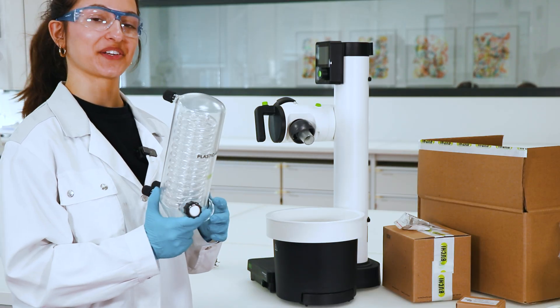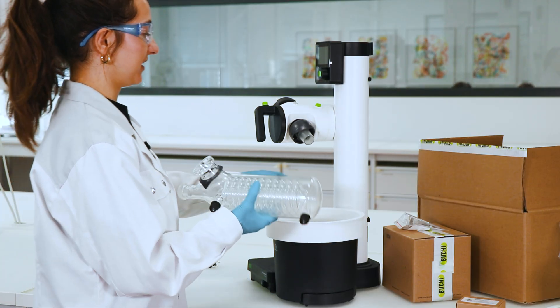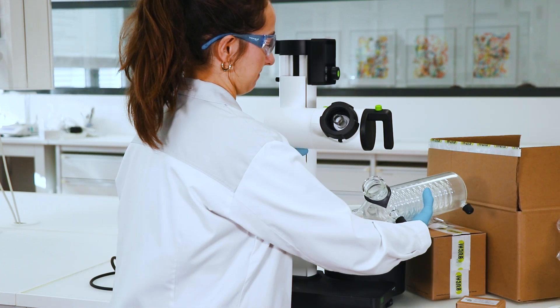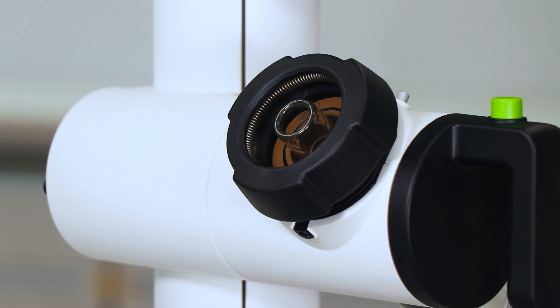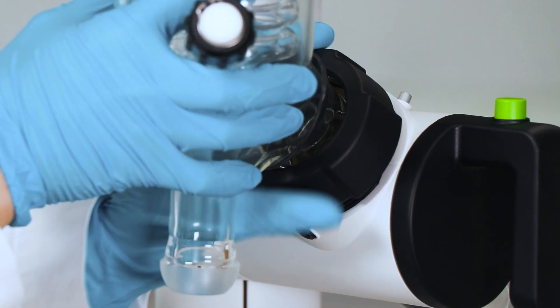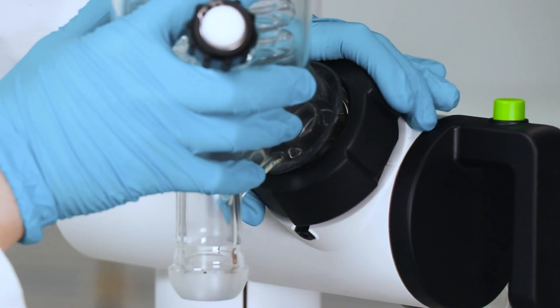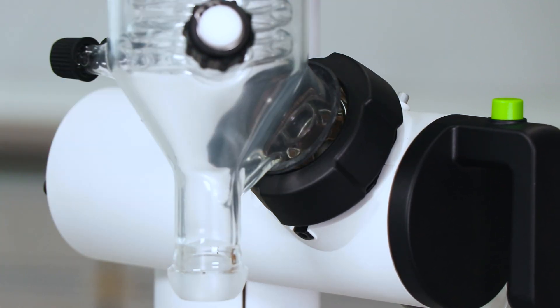Okay, so then the next thing is the condenser. I'm actually going to turn the R80 so you can see it better. Okay, so what you do is, this part goes in here, and you just turn the flask knot to secure it tightly, so like this.